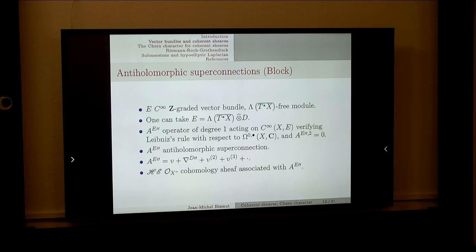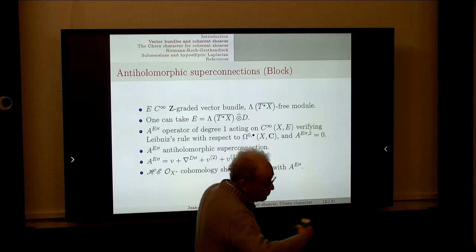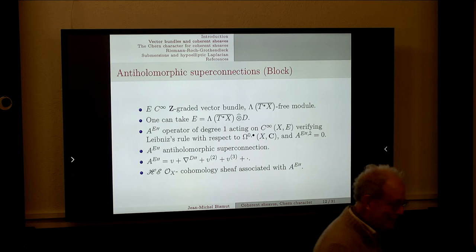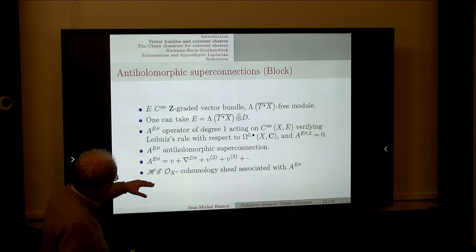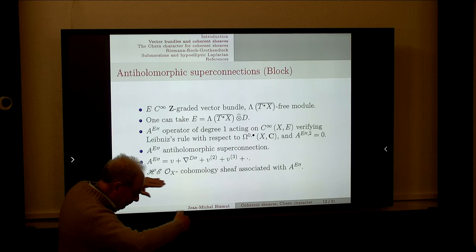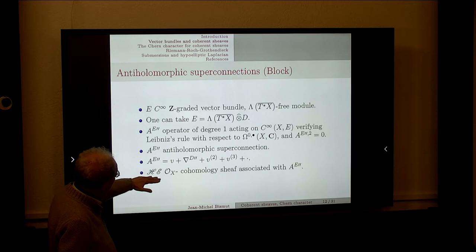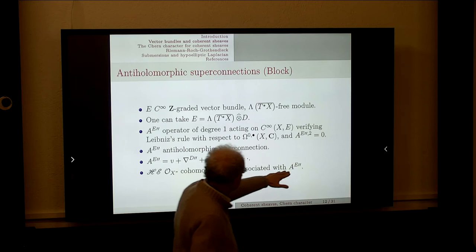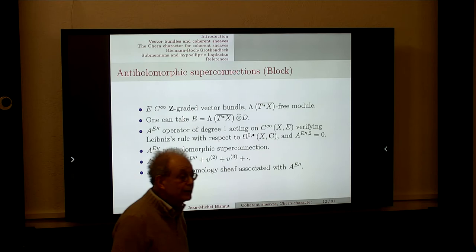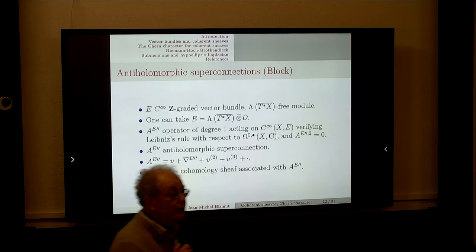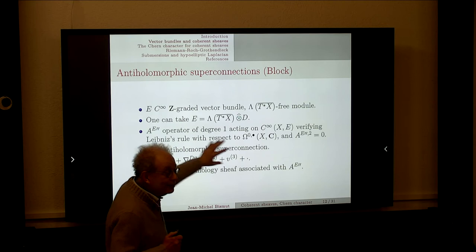Audience question: How can the total degree be 1 with many terms? Speaker: It terminates because you're bounded by the degree in the forms—don't worry, there are no infinities here to renormalize. This operator commutes with multiplication by holomorphic functions. I define H_A to be the cohomology of the sheaf associated with A″. I take this operator, its square vanishes, and I want to understand locally what the cohomology is. This is a more general object than before: previously there were only two terms; now there are many terms of all possible degrees.